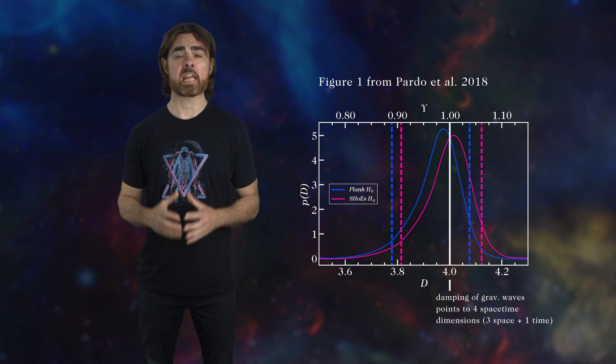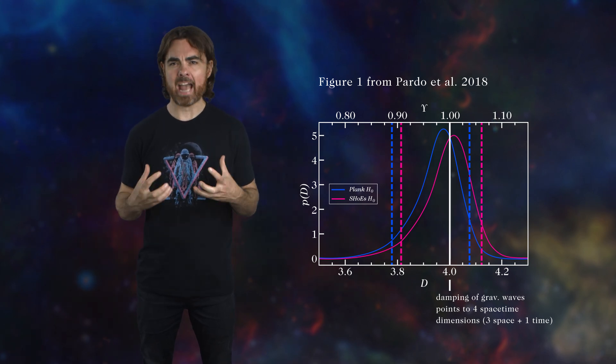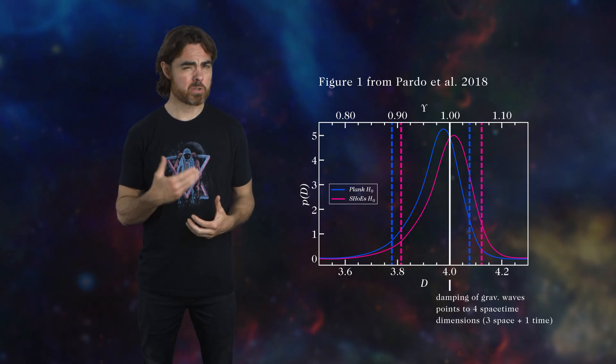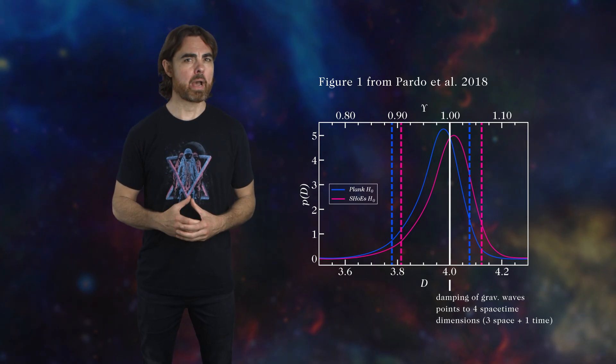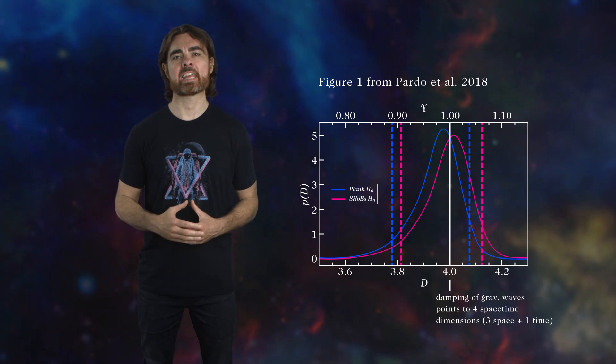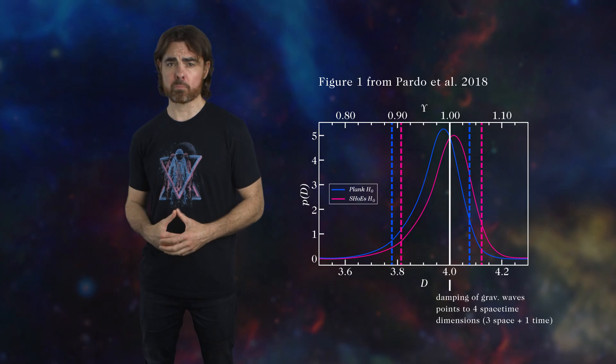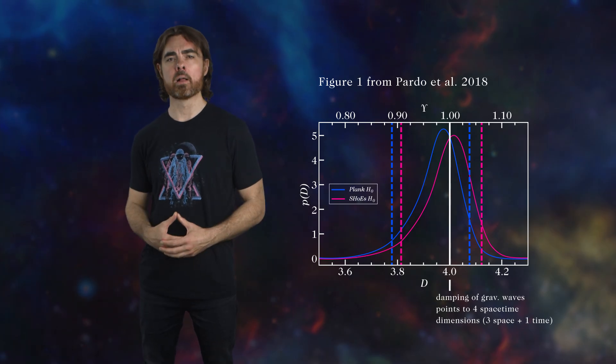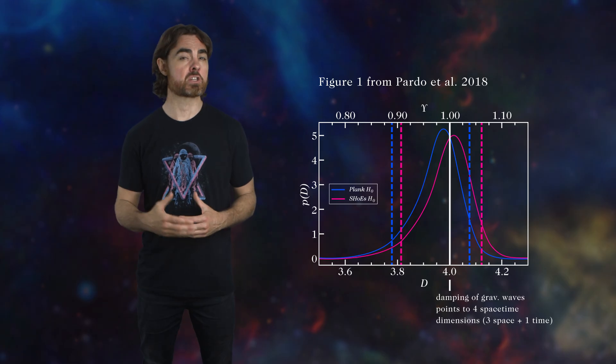There still might be compactified extra dimensions, so string theorists are okay for now. By the way, comparison of the electromagnetic and gravitational wave arrival times also allowed us to verify that gravity really does travel pretty much exactly at the speed of light. This ruled out or constrained various alternative theories to general relativity.